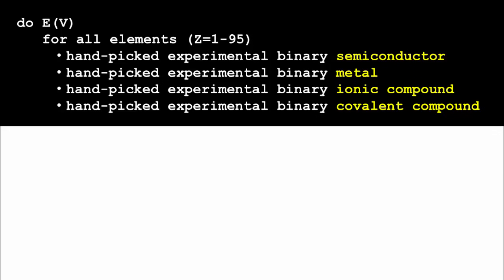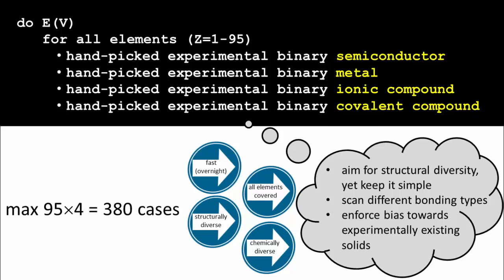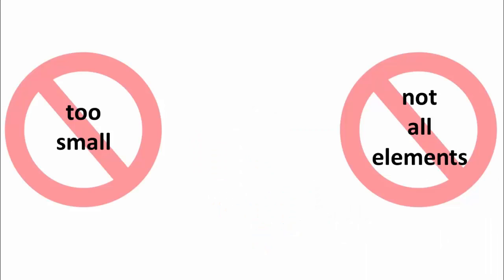The third part of the basic test set: again energy versus volume for all elements, but now for every element hand-pick a binary semiconductor, a binary metal, a binary ionic compound, and a binary covalent compound — to have built-in diversity in bonding types. That is also fast, covers all elements, and is structurally and chemically diverse. You should pay attention to selecting structures that are simple, and if you take structures that exist in nature you will build in a useful bias toward situations you will actually encounter.